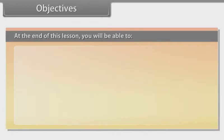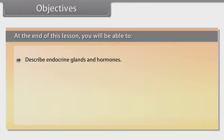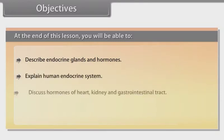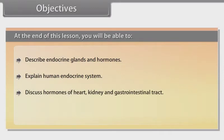Objectives: At the end of this lesson you will be able to describe endocrine glands and hormones, explain the human endocrine system, discuss hormones of heart, kidney and gastrointestinal tract, and describe the mechanism of hormone action.